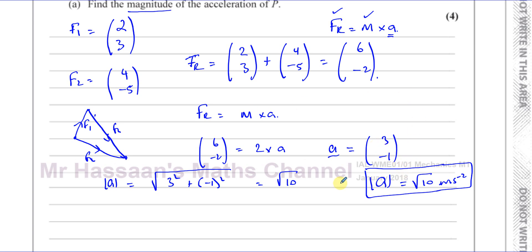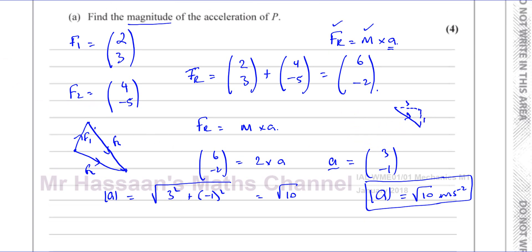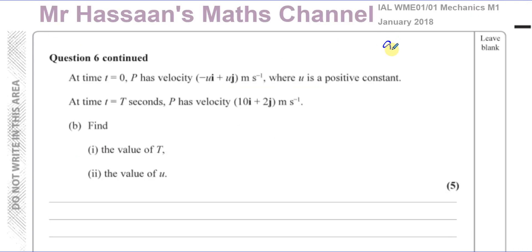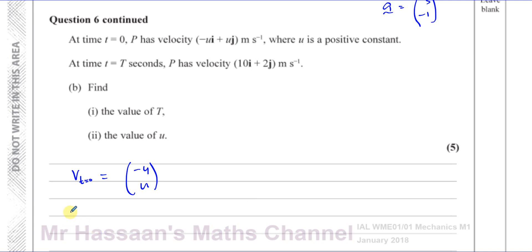So acceleration was 3, negative 1. At time t equals 0, P has a velocity of minus ui plus uj. So the initial velocity when time equals 0 is minus u and u. At time t equals T seconds, the velocity is 10i plus 2j. Part 1 says find the value of T.